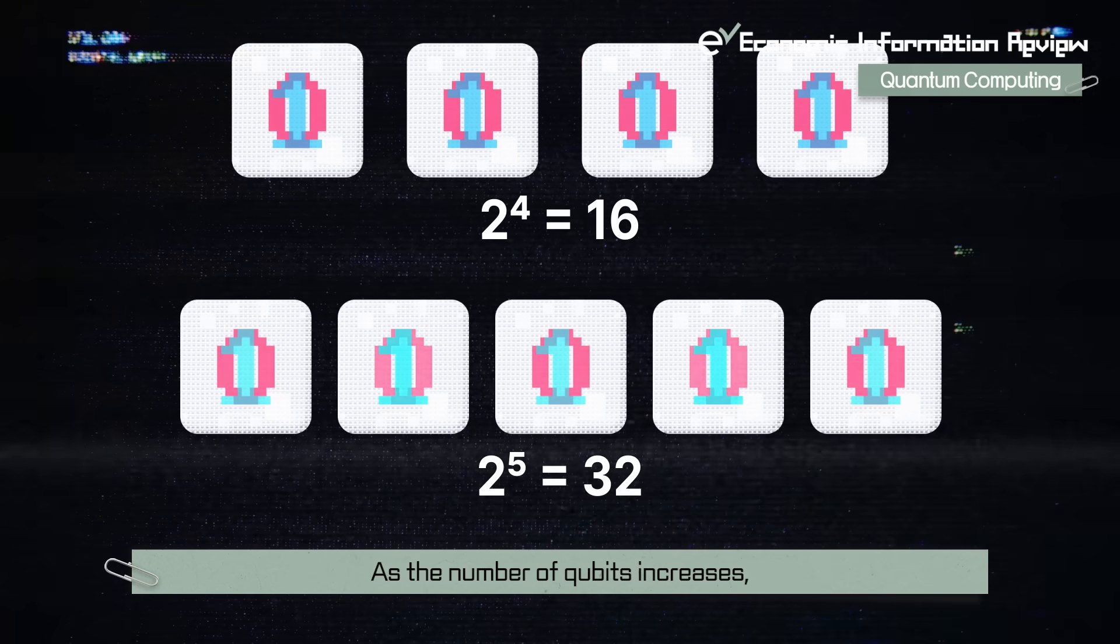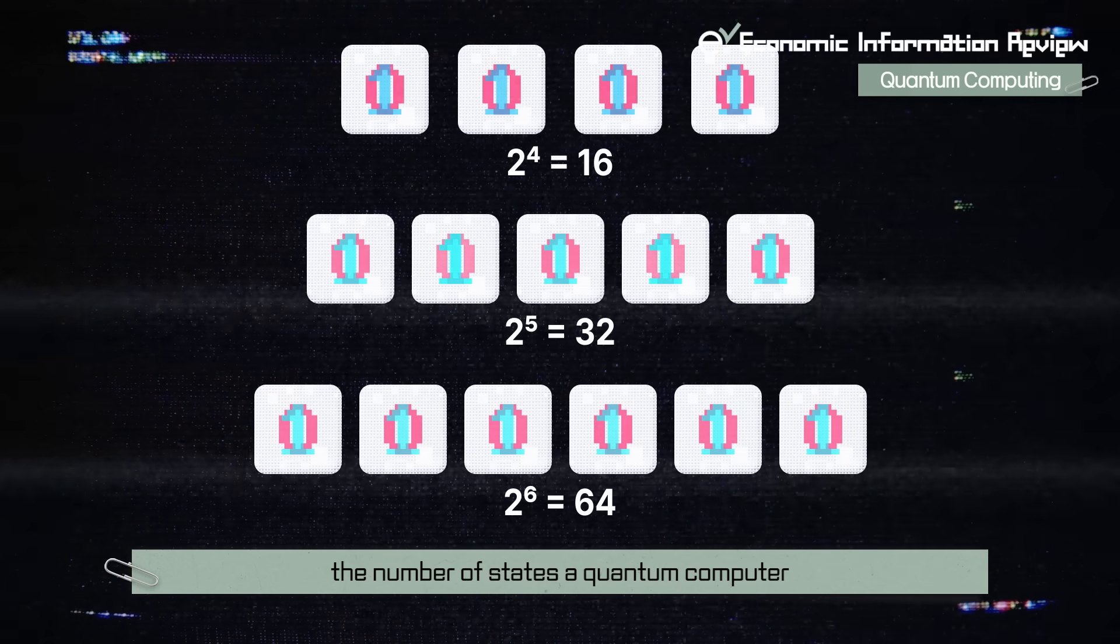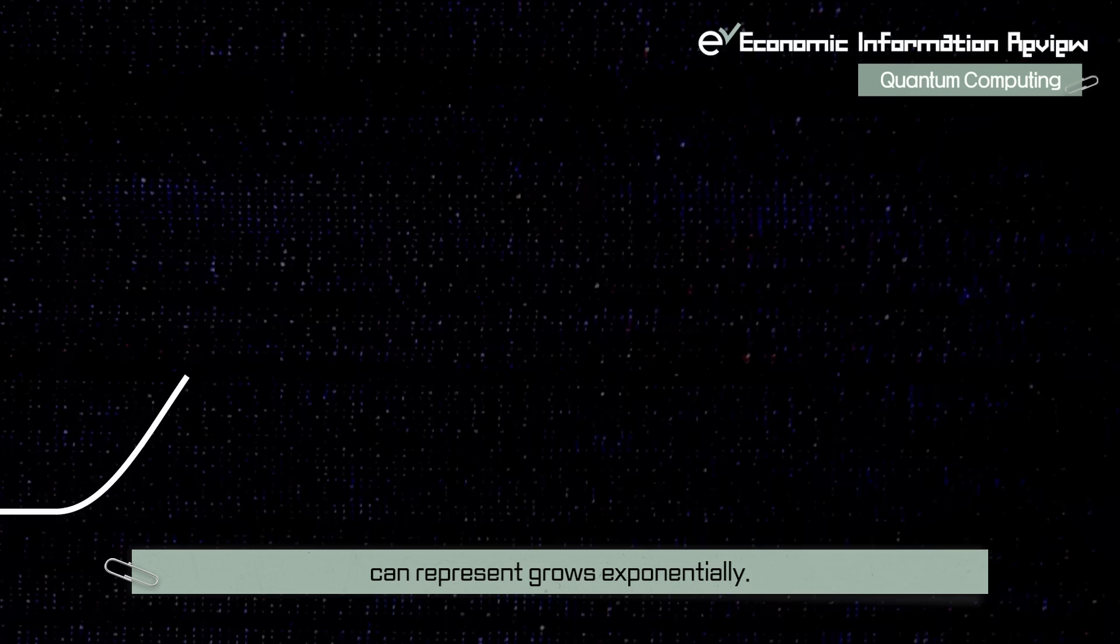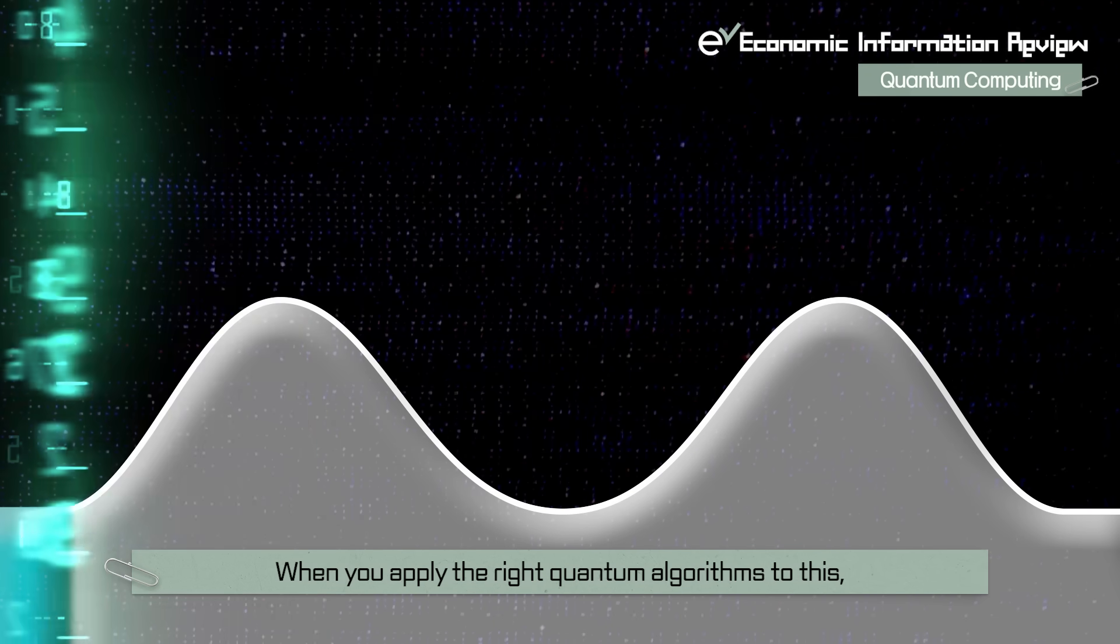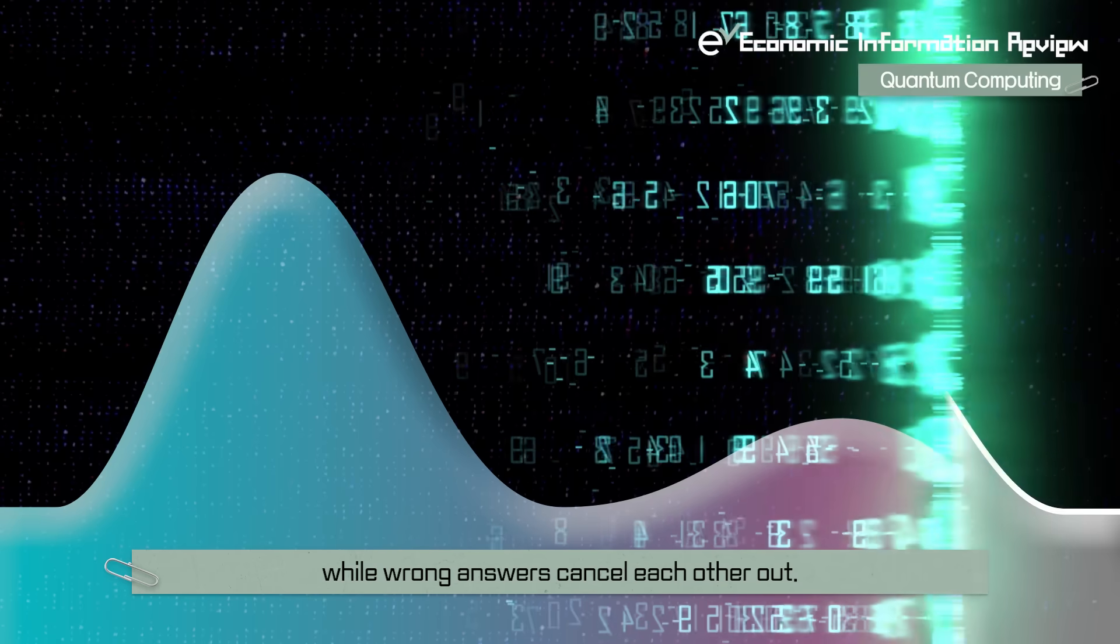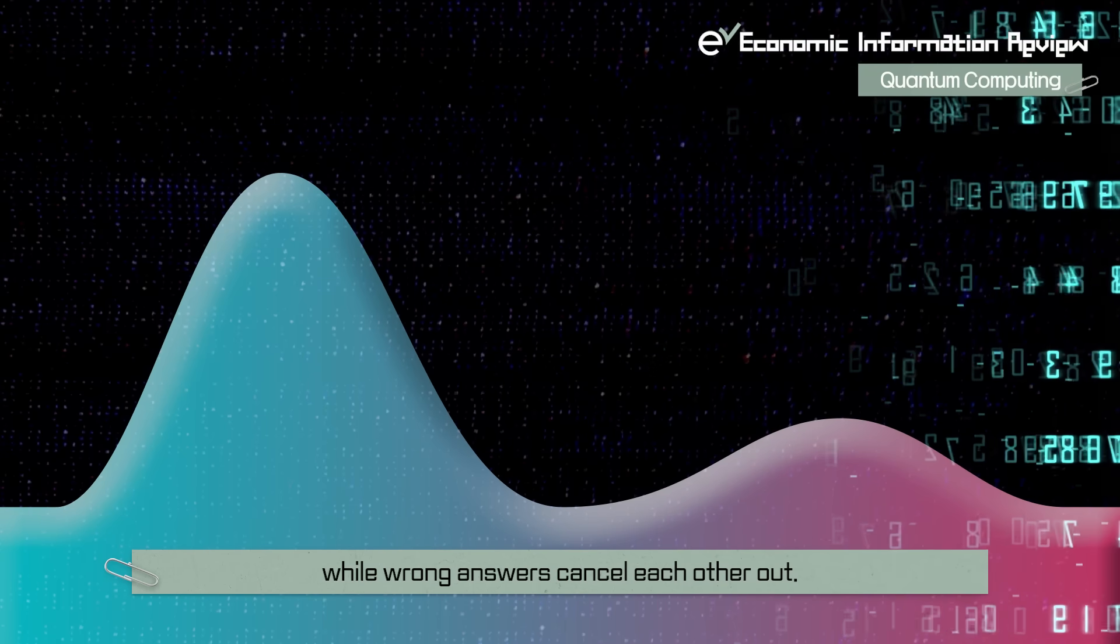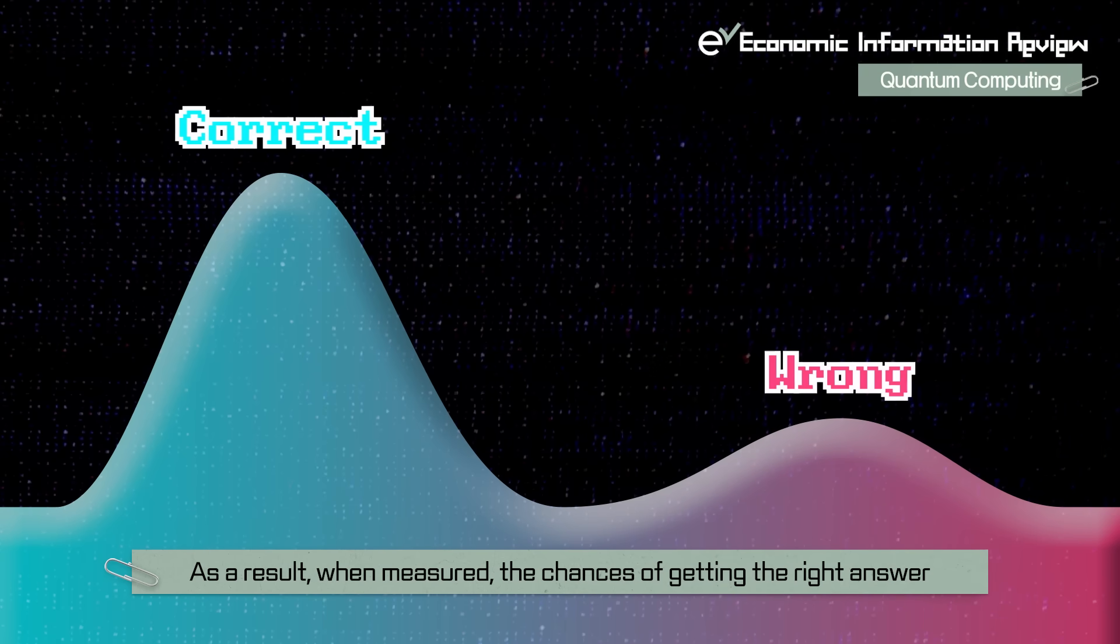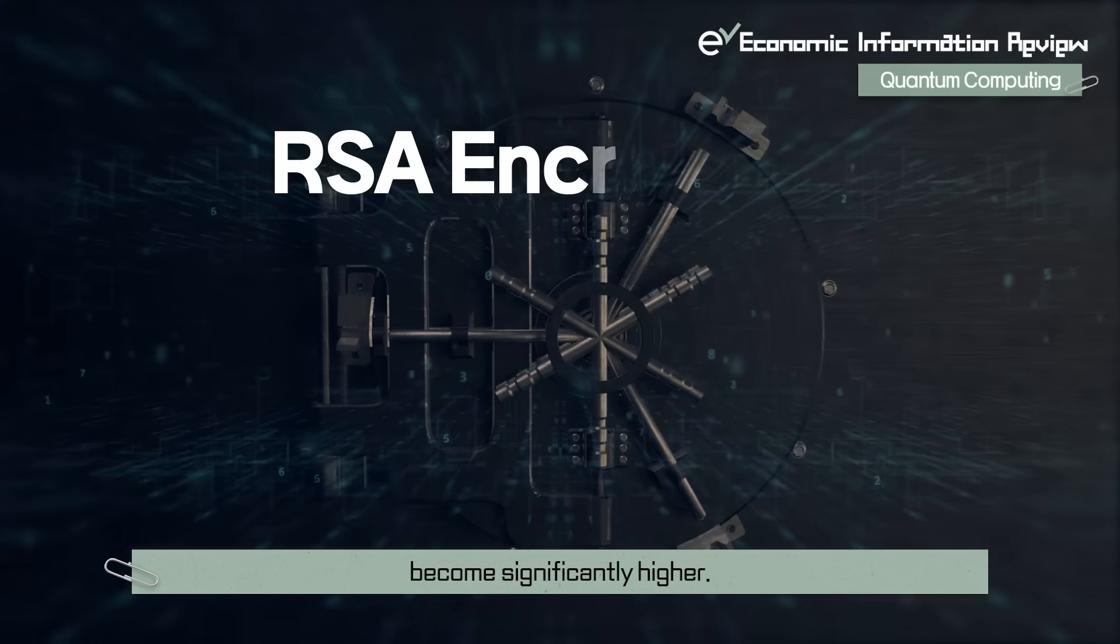As the number of qubits increases, the number of states a quantum computer can represent grows exponentially. When you apply the right quantum algorithms to this, the probability of the correct answer is gradually amplified, while wrong answers cancel each other out. As a result, when measured, the chances of getting the right answer become significantly higher.